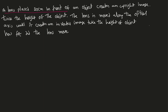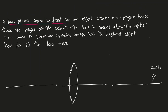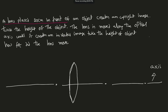The lens is then moved along the optical axis until it creates an inverted image twice the height of the object. How far did the lens move? I'll draw the optical axis. At first I don't know what kind of lens it is — I'll assume converging and confirm after finding f. The object distance d-naught = 20 centimeters.